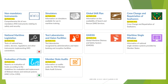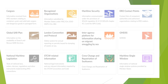Member States are required to report various types of data in accordance with their obligations under IMO instruments. This data is then processed and made accessible through GISIS. Key Functionalities include Data Collection: collecting data regarding safety incidents, environmental compliance, security, and training facilities.